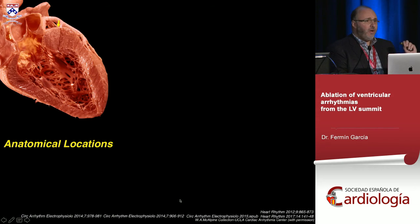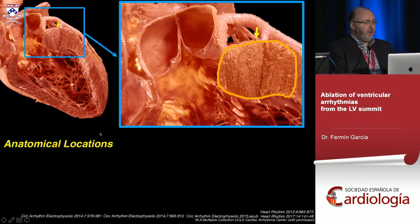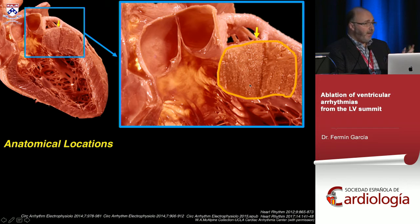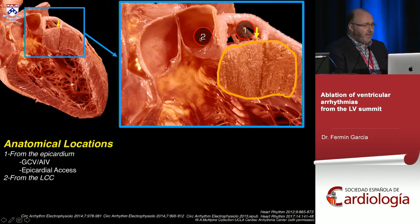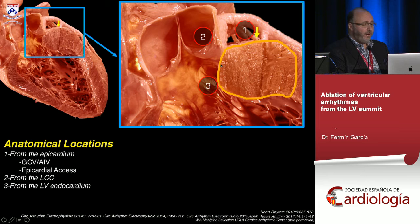When mapping this area, we need to understand what I call the neighbors. The arrhythmia could be exiting near the LV summit or coming from somewhere in this ventricular tissue. You can map from the epicardium directly — with the limitations mentioned — or from the coronary venous circulation, from the left coronary cusp, or from the LV endocardium below the left coronary cusp, either retrograde or transseptal.